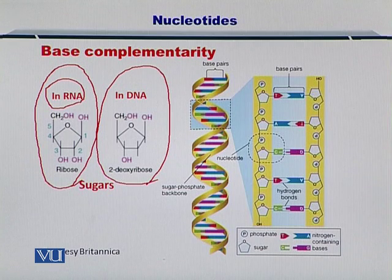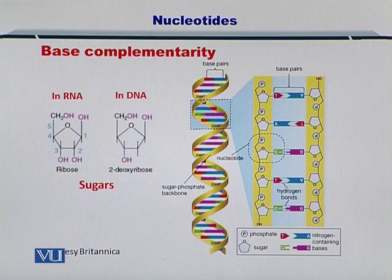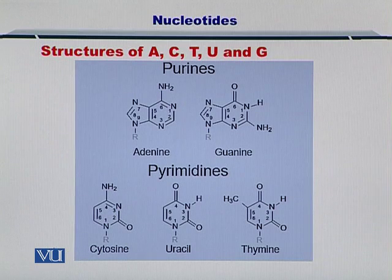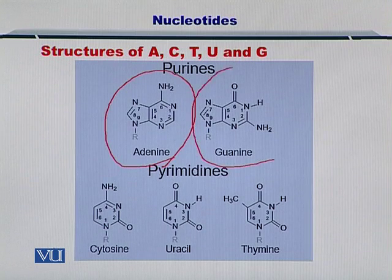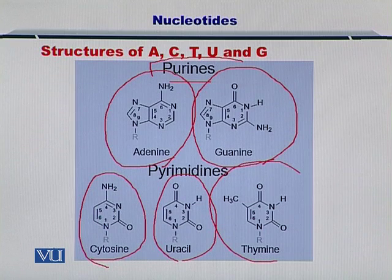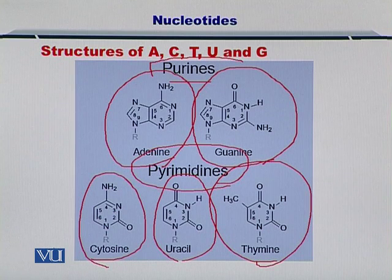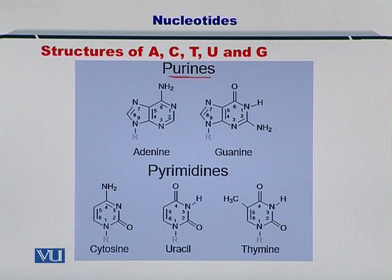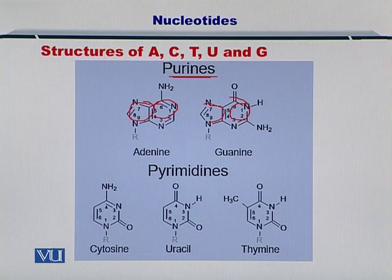Their coupling to the phosphate stays the same. It is a phosphate on top of a sugar on top of another phosphate on top of another sugar. The nucleotide bases are attached to the sugars. There are five different nucleotides if you look at the DNA and the RNA together.